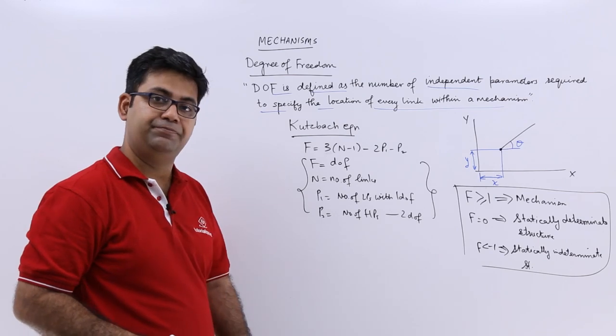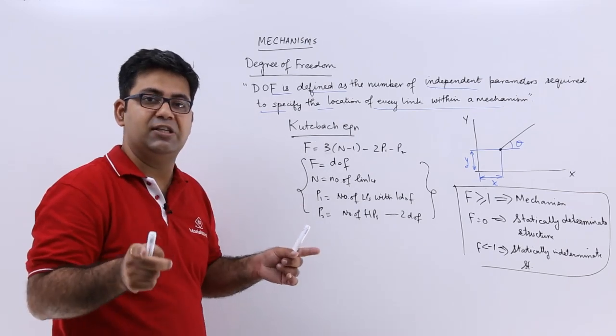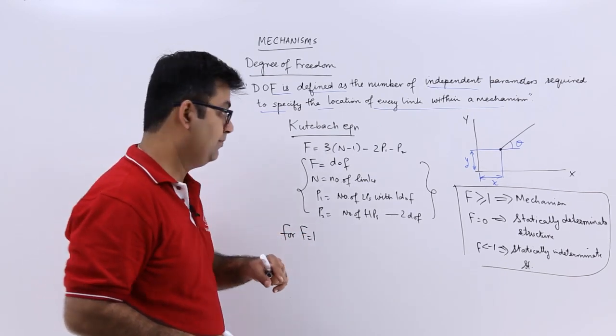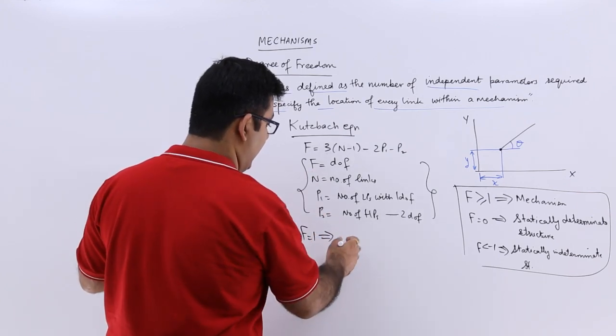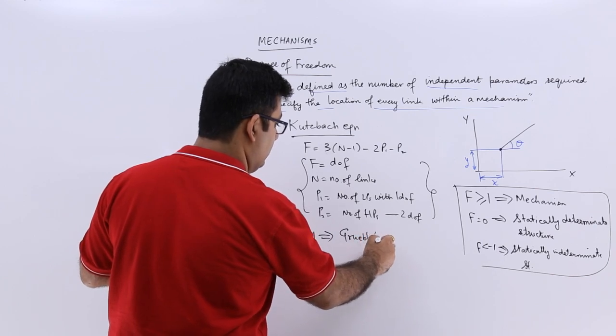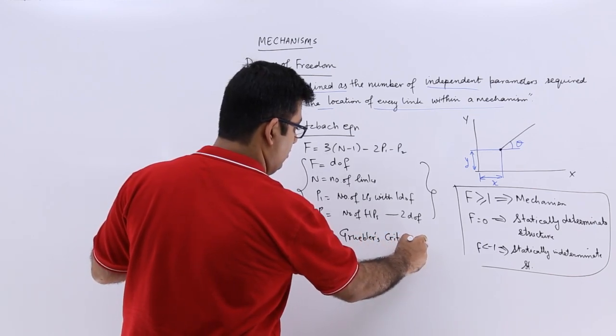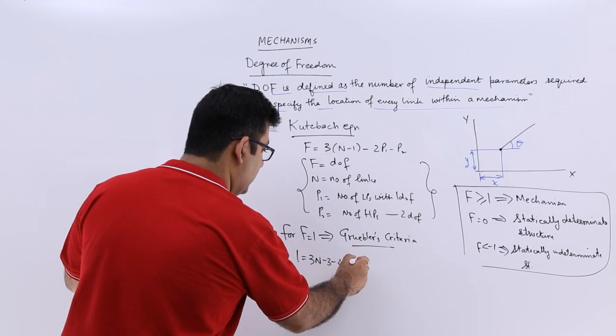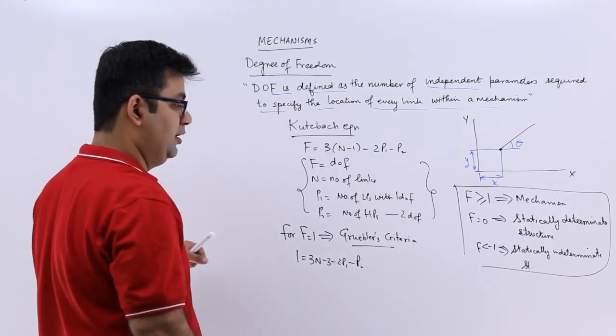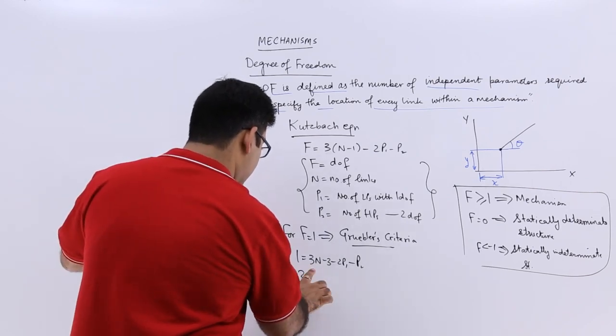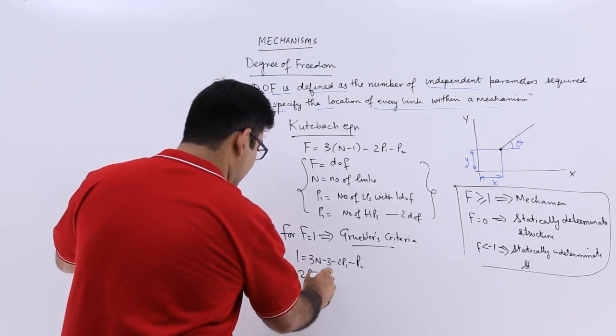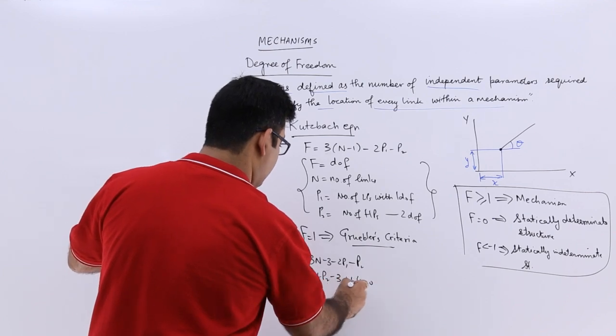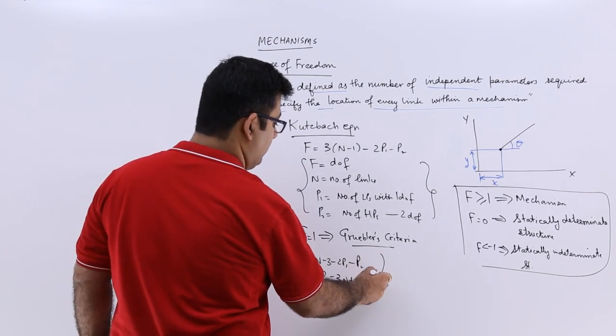Now if I make F equal to 1 in the Kutzbach equation, then the criteria that we get is called the Grubler's criteria. For F equal to 1, if I put in the Kutzbach equation I get the Grubler's criteria, and that is 1 = 3N - 3 - 2P1 - P2. Bringing all on the left hand side you will get 2P1 + P2 - 3N + 4 = 0. This is what you call the Grubler's criteria.